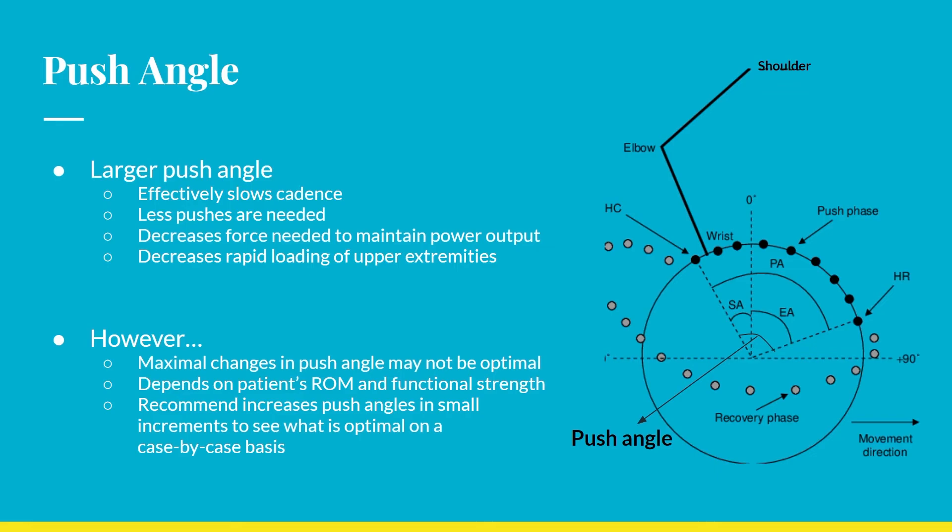A larger push angle can also decrease impact on the upper extremity during the contact phase. If the user contacts the pushrim at a perpendicular angle, they are subject to rapid loading of the upper extremities, increasing risk of wrist pain or shoulder impingement. By reaching further back, the upper extremity can gradually accept the load, creating less impact. However, maximal changes in push angle may not always be optimal as it depends on the user's range of motion and functional strength, so it may be better to increase the push angle incrementally.